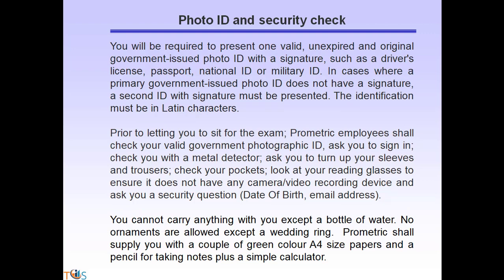Once at the test center on the scheduled date, you will be required to present one valid, unexpired, original government-issued photo ID with a signature — such as a driver's license, passport, national ID, or military ID. If the primary photo ID does not have a signature, a second ID with signature must be presented. The identification must be in Latin characters. Prometric employees will check your photo ID, ask you to sign in, check you with a metal detector, ask you to turn up your sleeves and trousers, check your pockets, inspect your reading glasses for cameras, and ask a security question such as date of birth and email address.